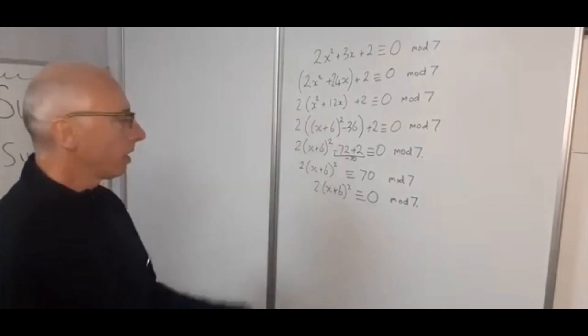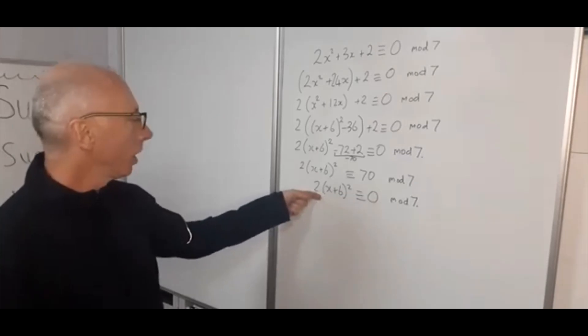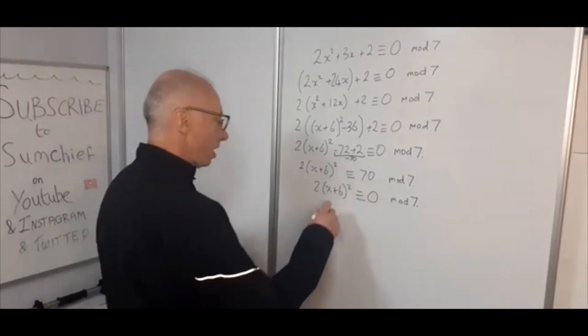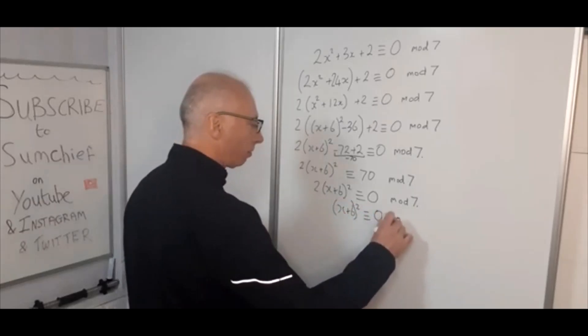Okay, so now we divide both sides by 2, which is just basically going to eliminate this number 2 here. And now we're left with (x + 6)² is congruent with 0 mod 7.